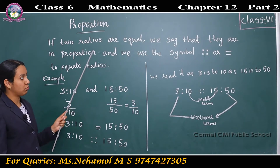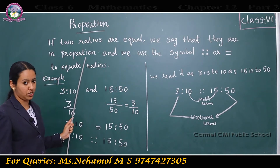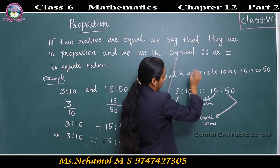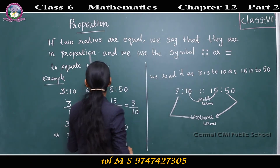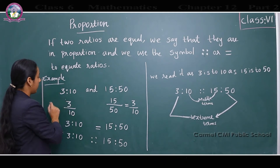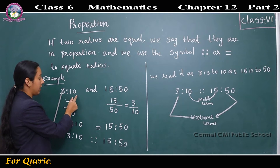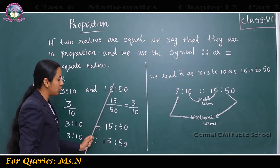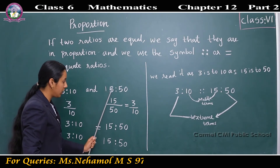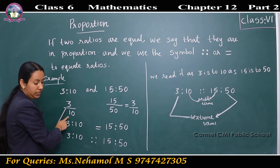If two ratios are equal, we say that they are in proportion. We use the symbol double colon or equals to equate ratios. For example, consider 3 is to 10 and 15 is to 50. Here, 3 is to 10 means 3 by 10.